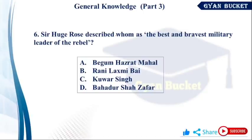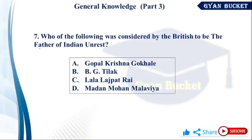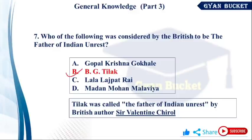Sir Hughes Rose described whom as the best and bravest military leader of the rebel in 1857? The revolt of 1857 was described by the British — the father of Indian unrest is called Bal Gangadhar Tilak, and who described him so? Valentine Chirol.